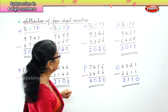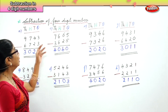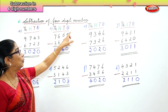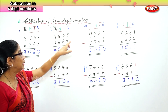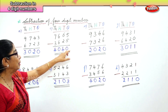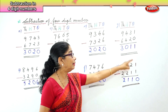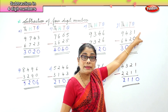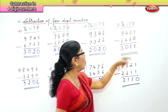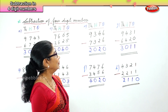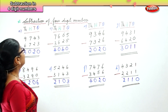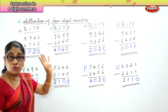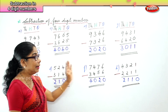What did we learn from this? We learned subtraction of four-digit numbers. When you have the same number take away the same number, you get 0. And if you have a number take away 0, the answer is the number itself.